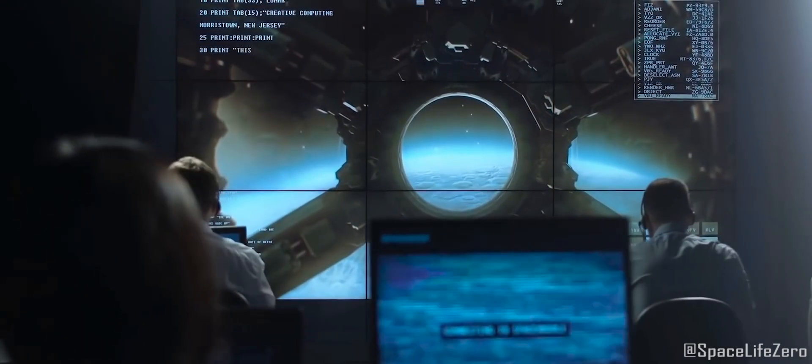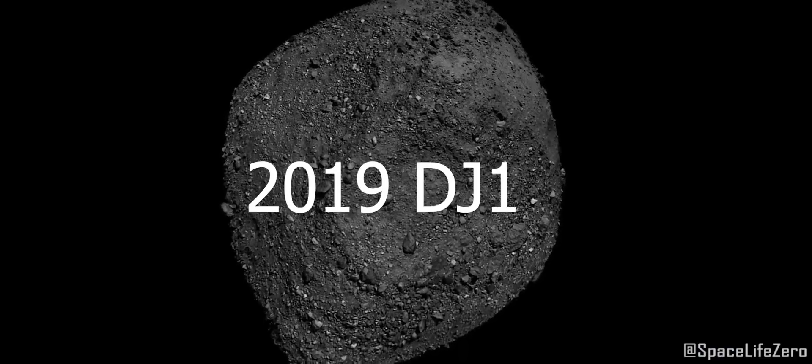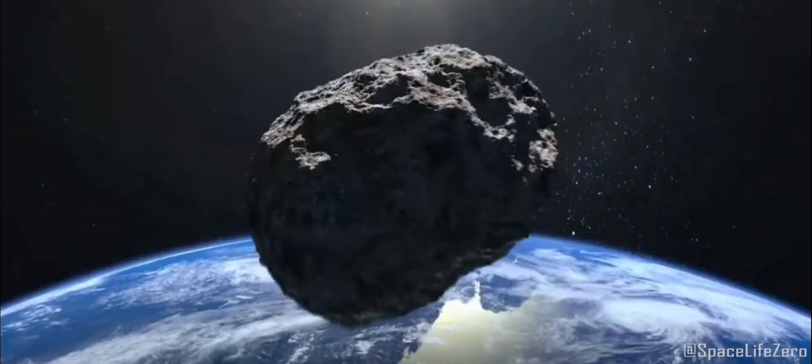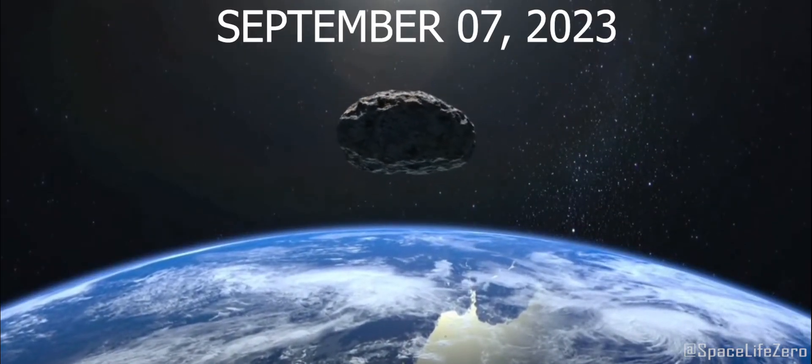As per the information received from NASA's Jet Propulsion Laboratory, an asteroid known by the name 2019 DJ-1 is going to have a close encounter with our planet on September 7, 2023.